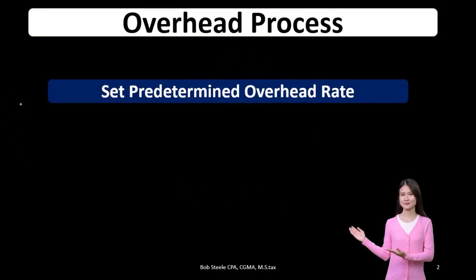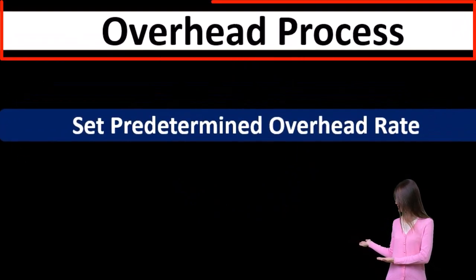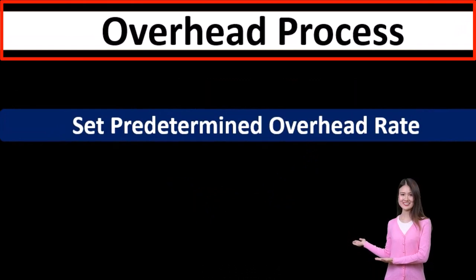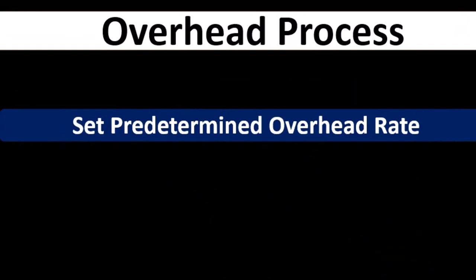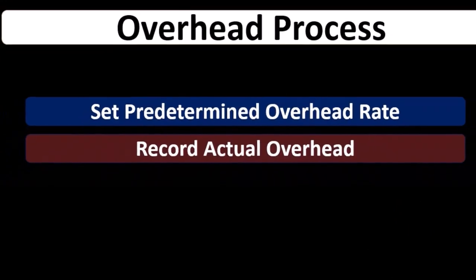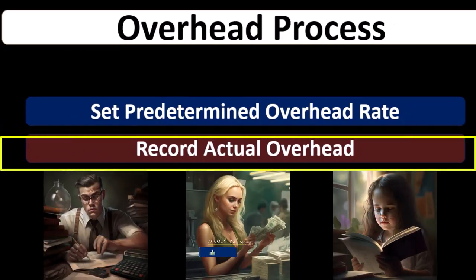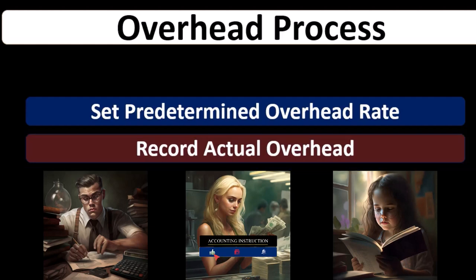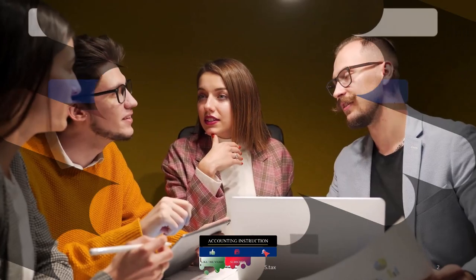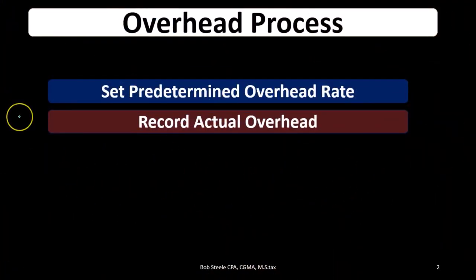Generally at the start of the period, at the start of the month, we set up the predetermined overhead rate — the thing that we will use to allocate the overhead from the bucket of overhead to individual jobs. Throughout the month, we're going to record actual overhead, the actual things that we cannot apply to a specific job in a job cost system. We put it into overhead and apply it to a job using the predetermined overhead rate as an estimate.